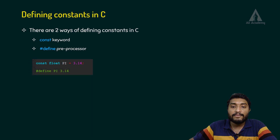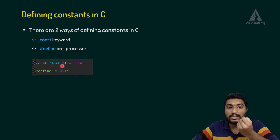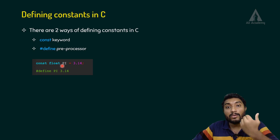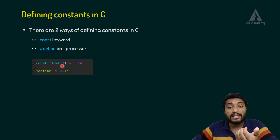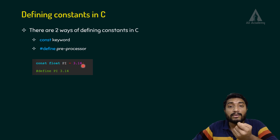If you look at this example: const float pi — we use pi as a constant. We cannot change the value of pi in our programming. In mathematical calculations, pi has a value of 3.14.